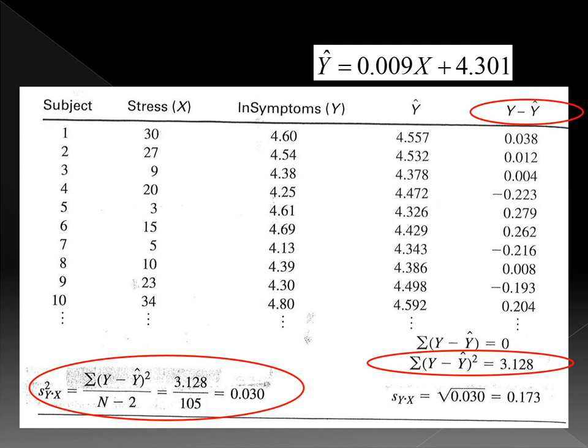Then the variance for residuals divided by n minus 1 minus 1. So it is 3.128 divided by 105. You will have 0.03, that is the residual variance. Then the standard error of estimate is the square root of this residual variance. So it is square root of 0.03 which is 0.173. That is the standard error of estimate.